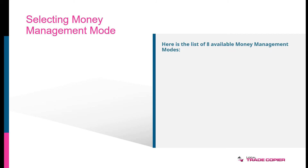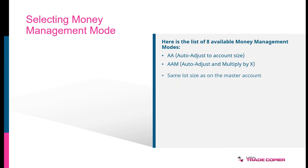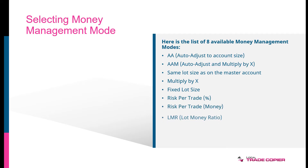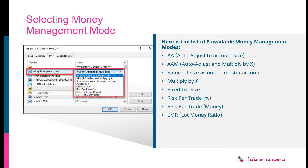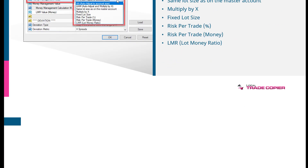Here is the list of all eight available money management modes in the Local Trade Copier: AA, AAM, same lot size as on the master account, multiply by X, fixed lot size, risk per trade in percentage, risk per trade in money, and LMR — lot money ratio. AA and AAM are the most commonly used options. By default, the trade copier is set to use auto-adjust to account size, which is AA.